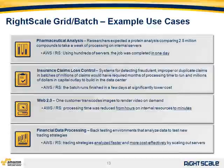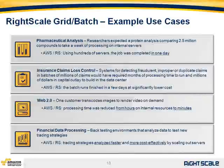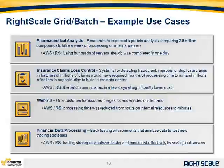The next example is around insurance claims, specifically fraud detection. This is a big provider of HMOs and PPOs that analyzes terabytes of data around insurance claims looking for fraudulent activity. Normally this processing would have required months based on internal resources. They were able to do this batch run in just a few days with dramatic cost savings using AWS and RightScale.